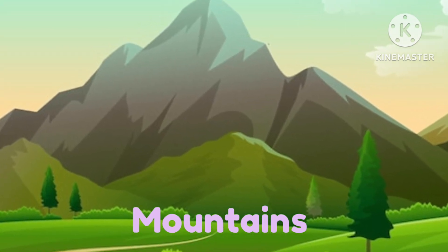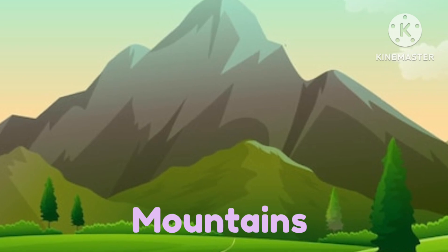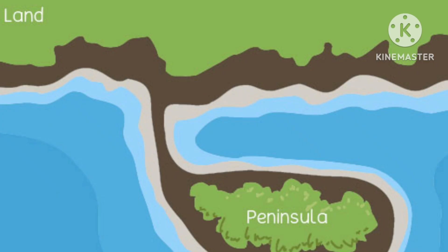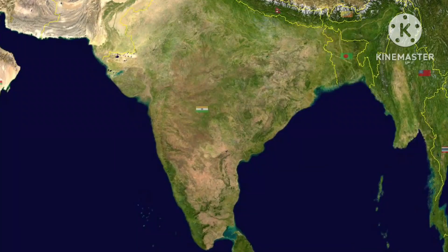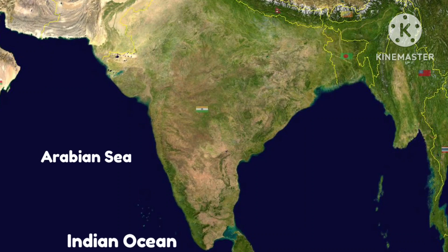The next landform is a peninsula. A peninsula is a landform that extends from a mainland and is surrounded by water on most but not all of its borders — sometimes defined as a piece of land bordered by water on three of its sides. India is called a peninsula because it is surrounded by the Indian Ocean on the south, the Arabian Sea on the west, and the Bay of Bengal on the east.